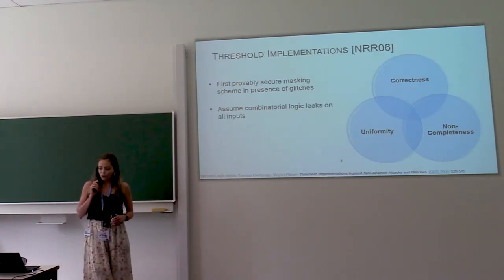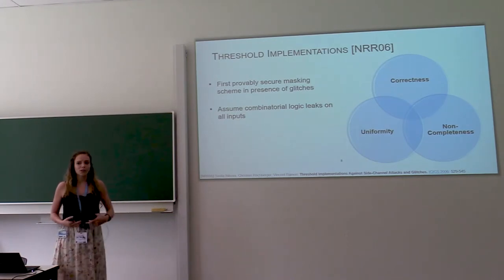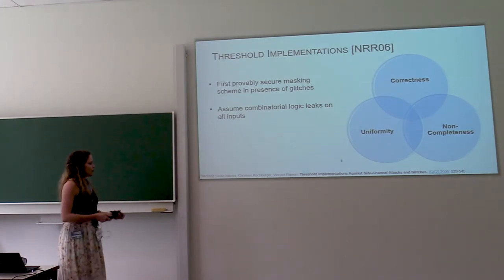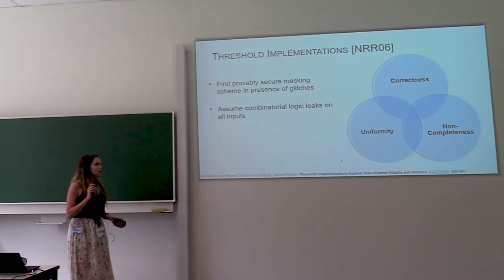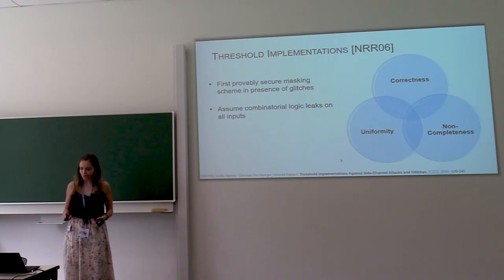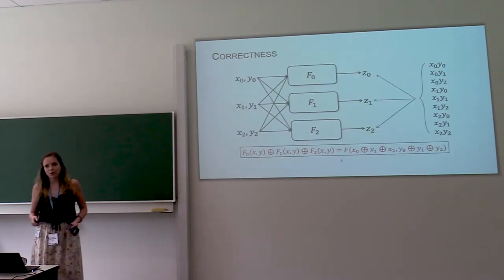So this is our adversary model for most of this talk. And then the first proposal for your masking scheme in the presence of glitches was threshold implementations. And they are based on three principles: correctness, non-completeness, and uniformity. So first correctness, that's an easy one.